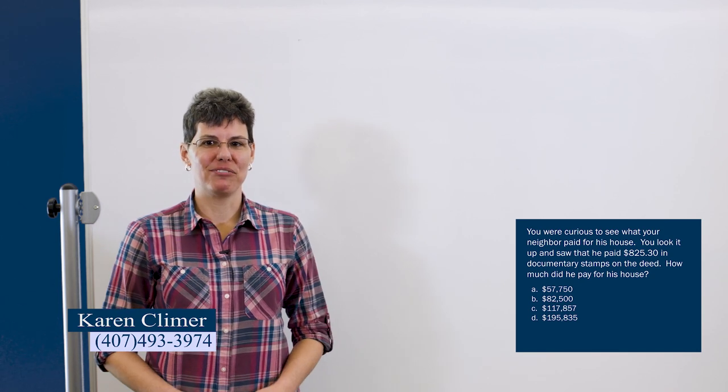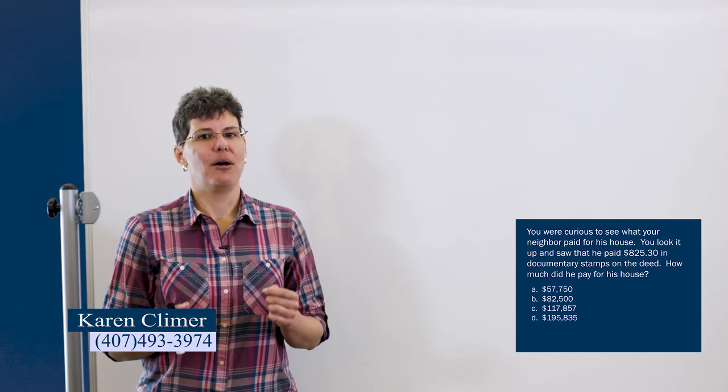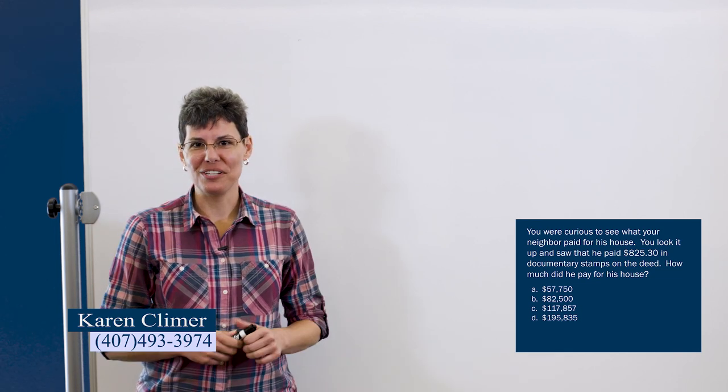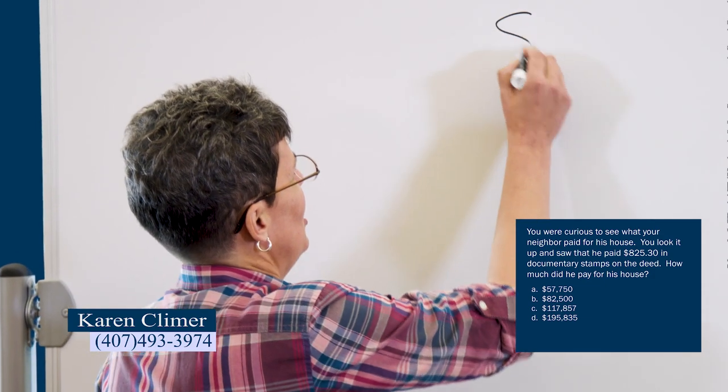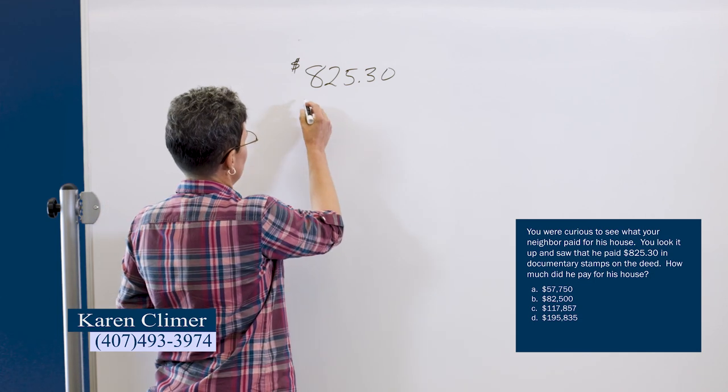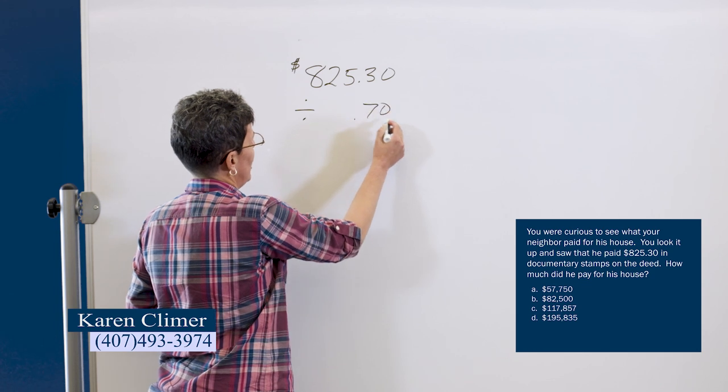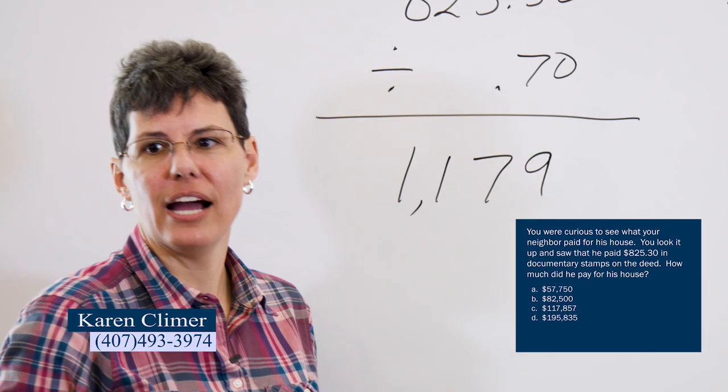You were curious to see what your neighbor paid for his house. You look it up and you saw that he paid $825.30 in documentary stamps on the deed. How much did he pay for his house? So in real life, the amount that you pay for your house is not public record. But the amount you paid in doc stamps on the deed is public record. So this is how the newspaper and other organizations figure out the prices of houses. And this is how a curious neighbor would figure it out too. It's also how you might see it on the state exam. So he paid $825.30 in doc stamps on the deed. And those are 70 cents each. So we're going to divide by 70. And that gives us 1,179 stamps. And it's per $100. So we're going to multiply by 100. And that gives us $117,900.